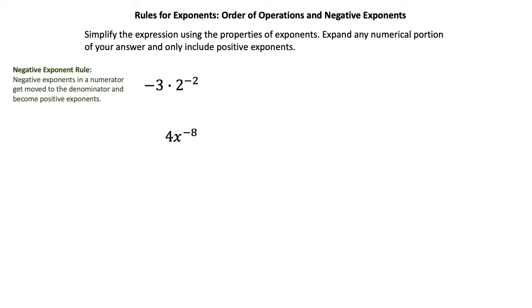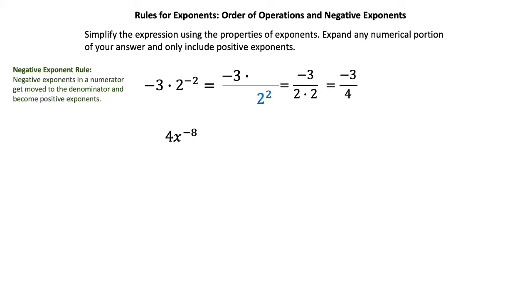Two more examples with the negative exponent rule. First: negative 3 times 2 to the negative 2 power. The negative 3 is an extra factor, so we write negative 3 over 1 and move 2 to the negative 2 to the denominator, changing the exponent to positive 2. That gives negative 3 over 2 squared, or negative 3 over 4. Second: 4x to the negative 8. The 4 and x to the negative 8 are in the numerator; x to the negative 8 moves to the denominator, giving a final answer of 4 over x to the 8th power.